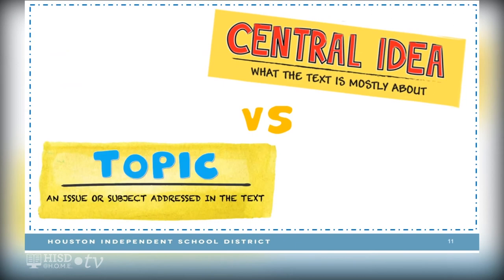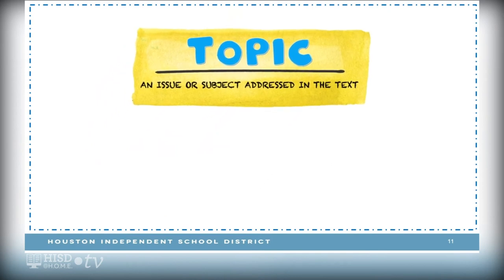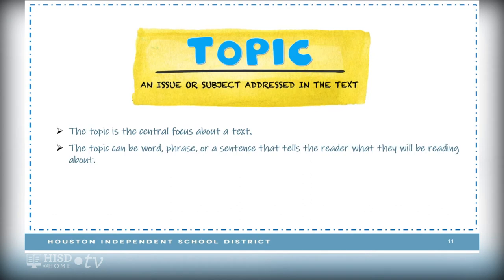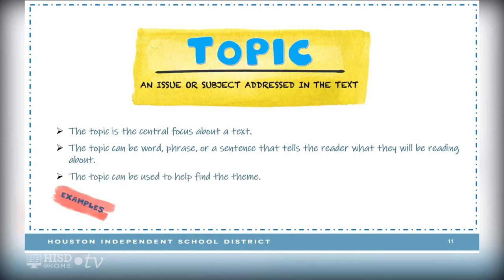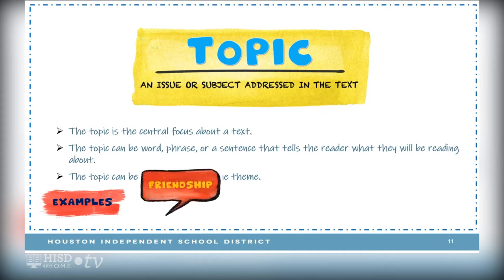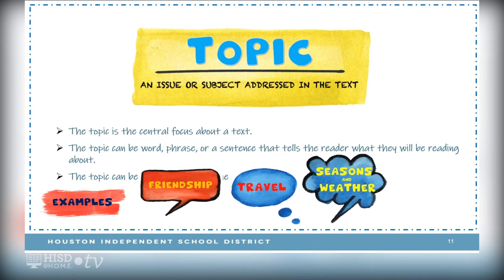Now, what's the difference between the central idea and the topic? The topic is an issue or subject addressed in the text — it is the central focus and can be a word, phrase, or sentence that tells the reader what they will be reading about. The topic can also be used to help find the theme. Examples of topics include friendship, travel, seasons and weather, and celebrations and holidays.